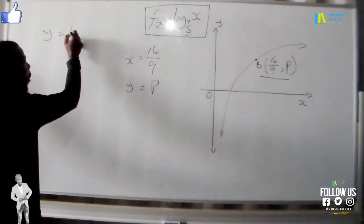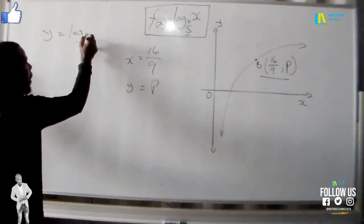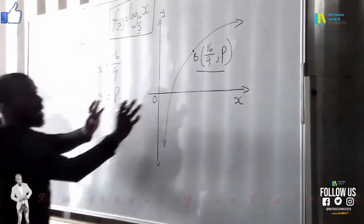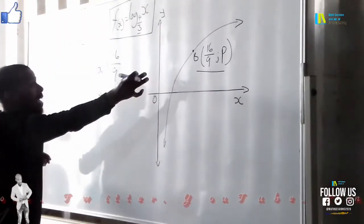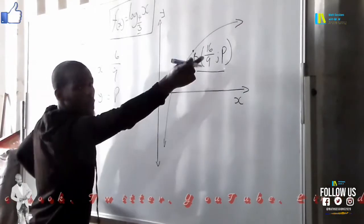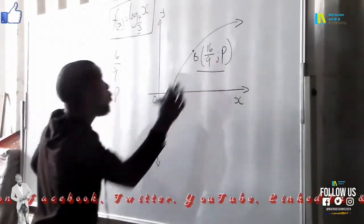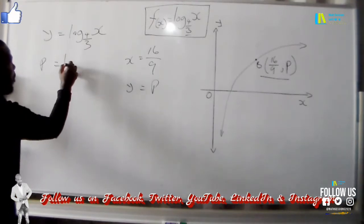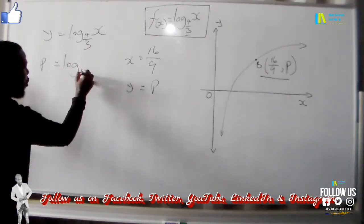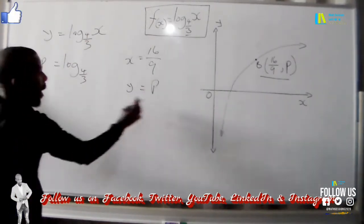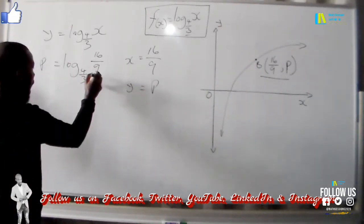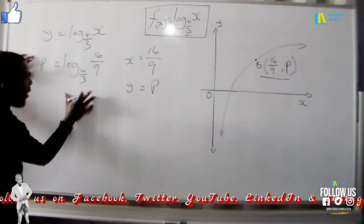So we take this point which is our x is 16/9 and our y is p. We have an unknown p and we just substitute it in the place of y. We say p equals log base 4/3, and our x is 16/9, so we say 16/9. This is what you have right now.